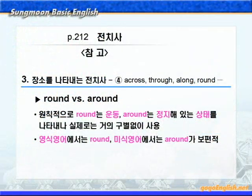round와 around에 대해서 다시 한번 설명해보죠. 원칙적으로 round는 운동을 나타내고, around는 정지해 있는 상태를 나타낸다고 배웠는데요. 실제로는 거의 구별 없이 사용됩니다. 그리고 또 한 가지, 영식 영어에서는 round, 미식 영어에서는 around가 보편적으로 쓰인다는 점도 참고로 알아두시기 바랍니다. 지금까지 살펴보았던 전치사들을 그림으로 정리해 보겠습니다. 여러분들 책에는 215쪽을 보시면 되겠어요.